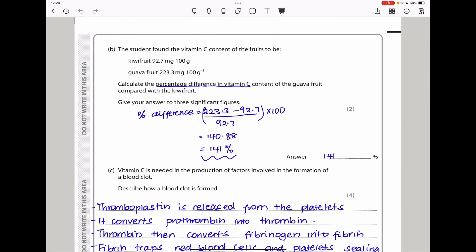The student found the vitamin C content of the fruit to be: for the kiwi 92.7 milligrams per 100 grams and the guava 223.3 milligrams per 100 grams. Calculate the percentage difference in the vitamin C content of the guava fruit compared with a kiwi and give your answer to three significant figures. The kiwi is going to be our reference. The difference should be 223.3 minus 92.7 divided by 92.7, comparing with kiwi as the denominator. Multiplying everything by 100, I get 140.88. Rounding it off, it becomes 141%.